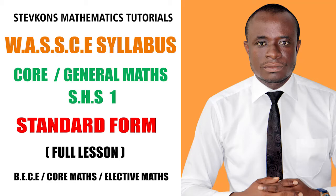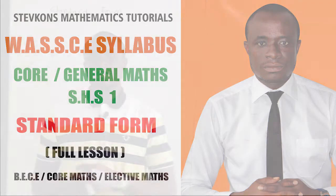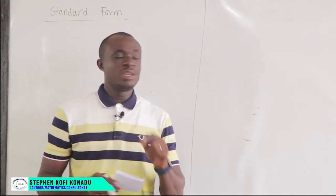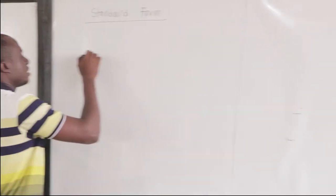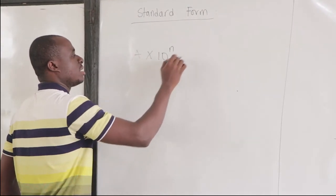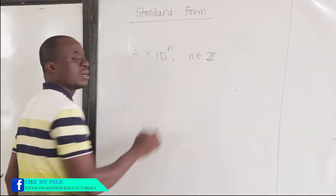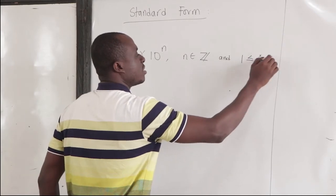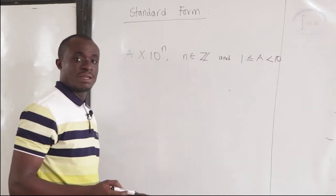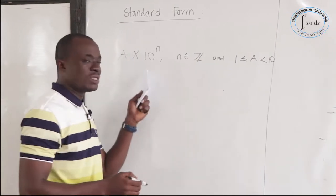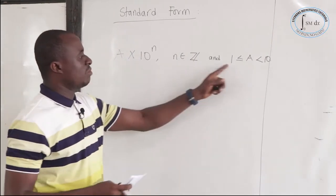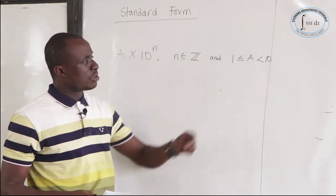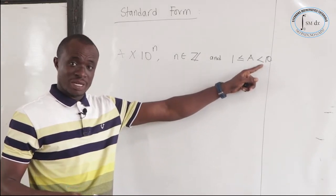Today we shall look at standard form. When do we say a number is in standard form? A number A is said to be in standard form if it can be written as A times 10 to the power N, where N is an integer, and A is greater than or equal to 1 and less than 10. Remember, A can be 1, but it should not be equal to or greater than 10 — it should be less than 10.